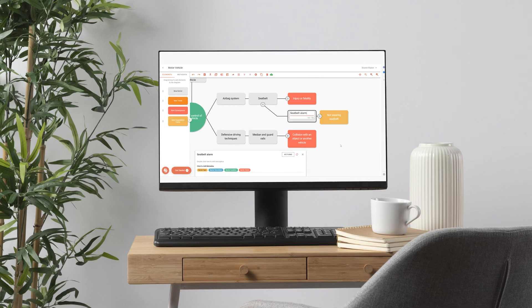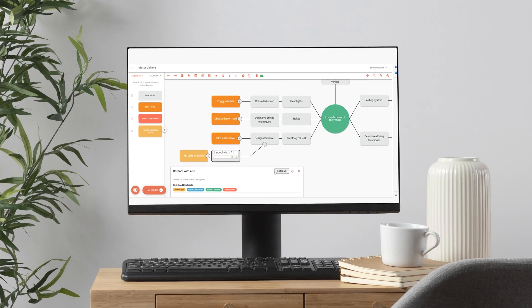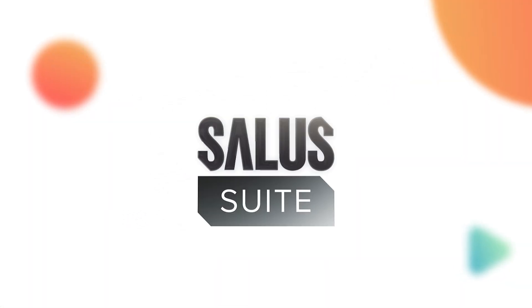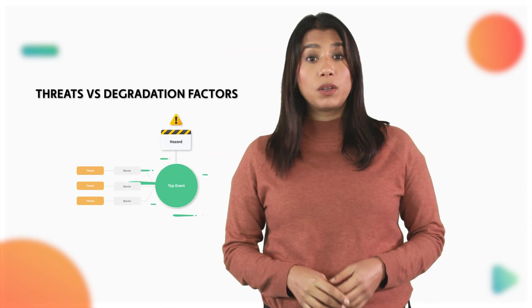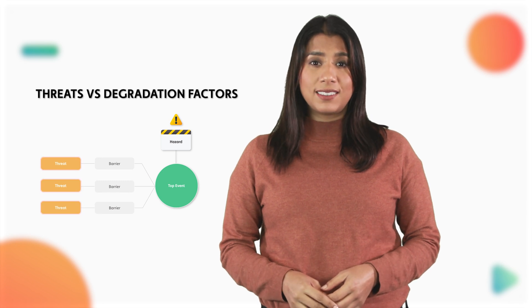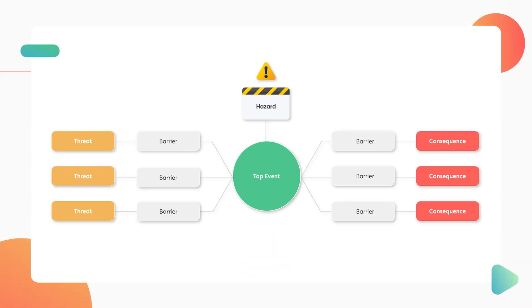If you are looking for a rundown of all the elements of a bowtie diagram, check out our video on how to make one, where we go into the specifics of each element and what they mean. In this video, we're going to nail down the exact differences between threats and degradation factors, as this is such a common mistake that can have a massive impact on the effectiveness of your diagram. So let's dig in.